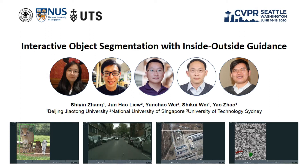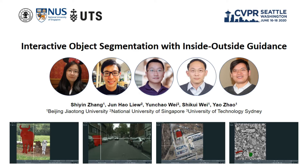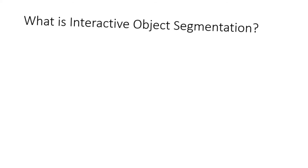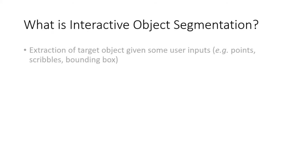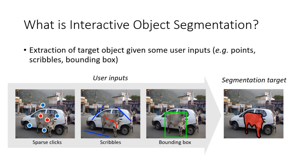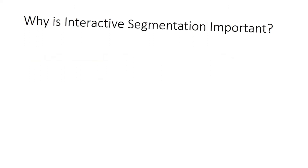In the demo below, we can see that our IOG is, in general, very fast and accurate. Before we delve into the details, interactive segmentation refers to the extraction of a target object given some user inputs such as points, scribbles, and bounding boxes.